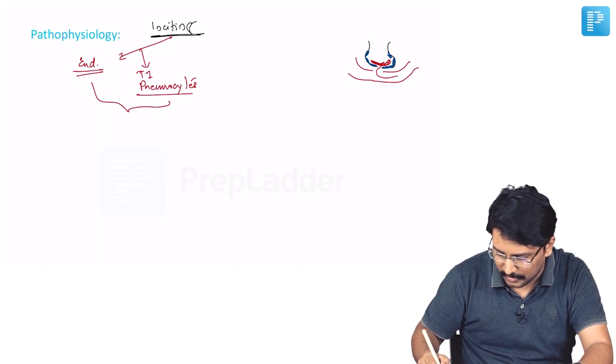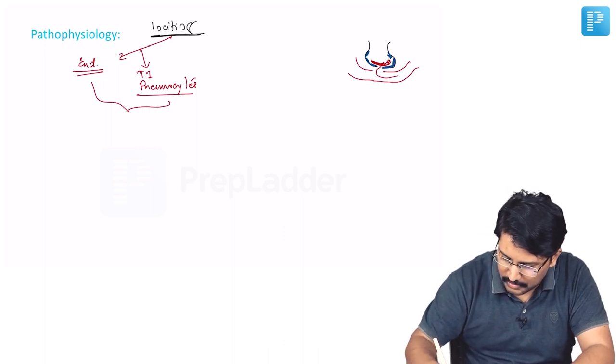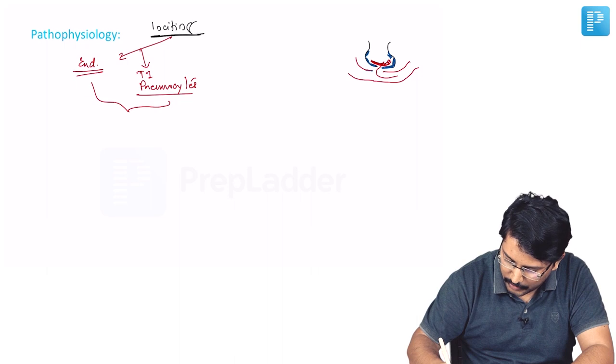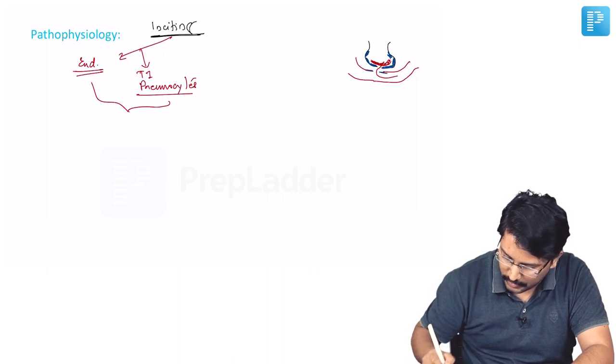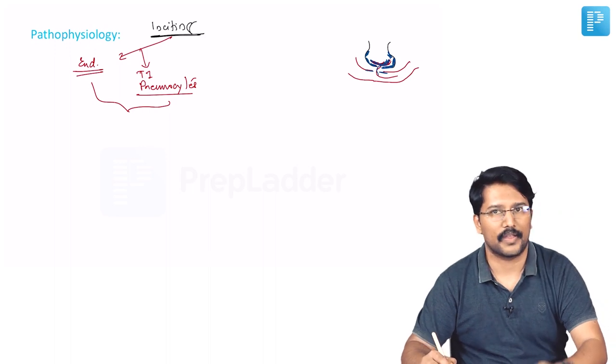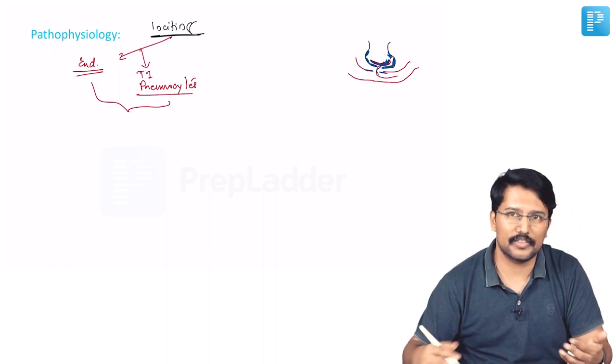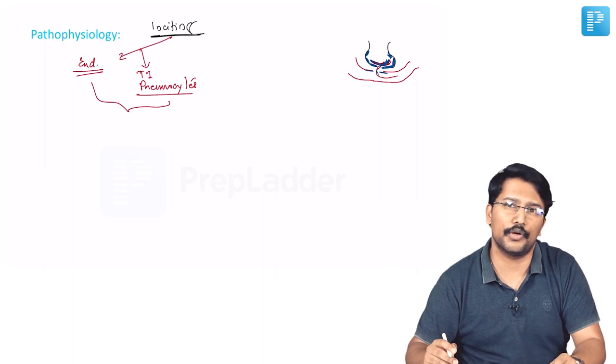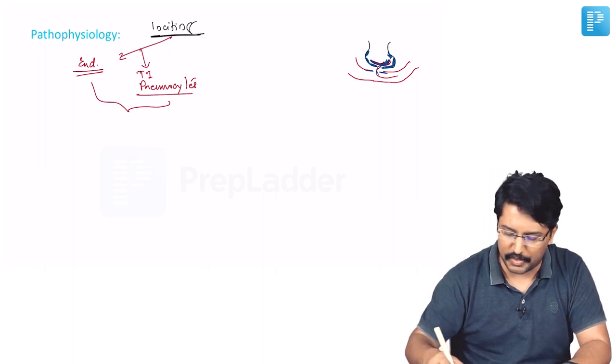Type 2 pneumocytes are the ones which secrete surfactant. So there is a breach in this alveolar lining and a breach in the capillary lining because of the endothelial injury. So the fluid leaks into the alveolar space and accumulates. And this fluid is exudative. This is not a transudative. This is not a hydrostatic pressure that is driving the fluid into alveolar space. This is exudative fluid.